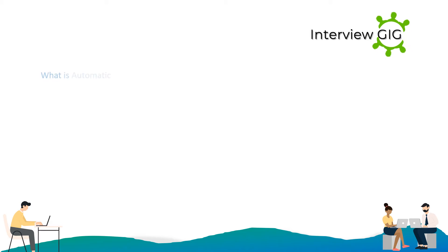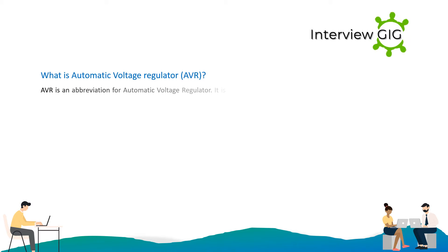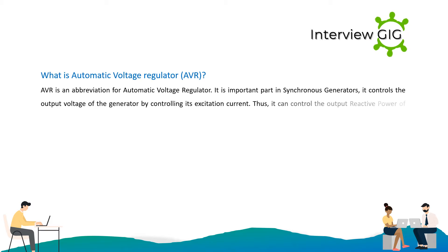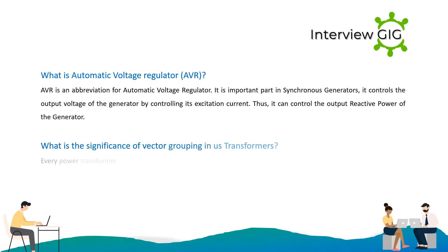What is an Automatic Voltage Regulator? AVR stands for Automatic Voltage Regulator. It is an important part of Synchronous Generators. It controls the output voltage of the generator by controlling its excitation current. Thus, it can also control the output reactive power of the generator.